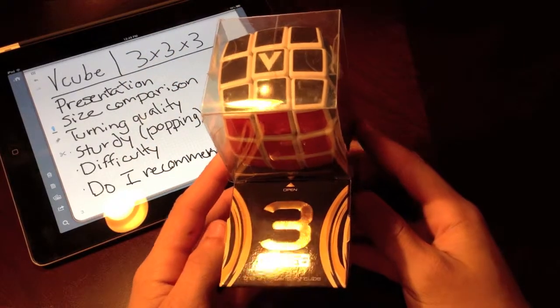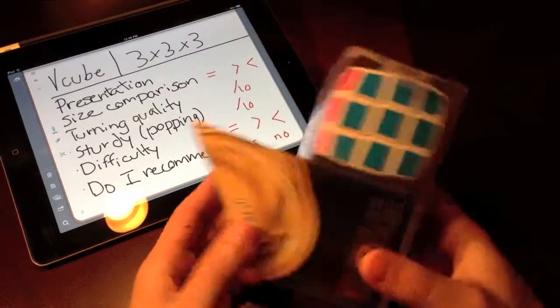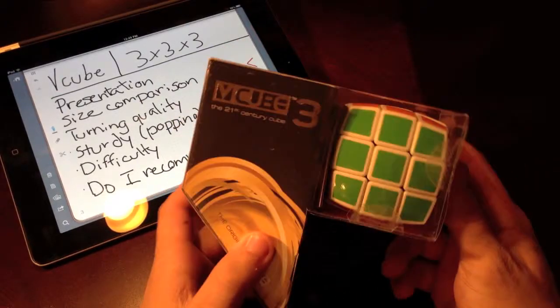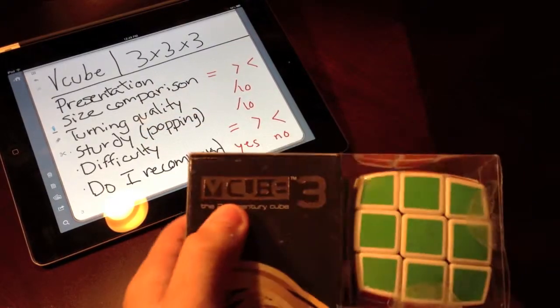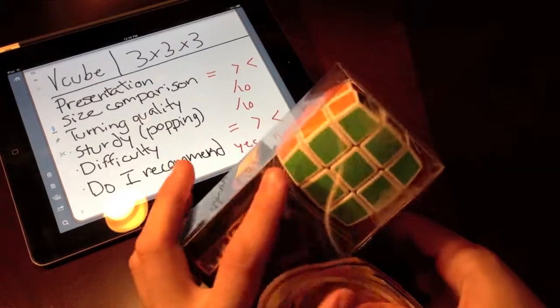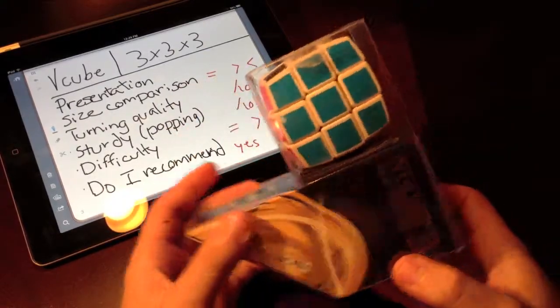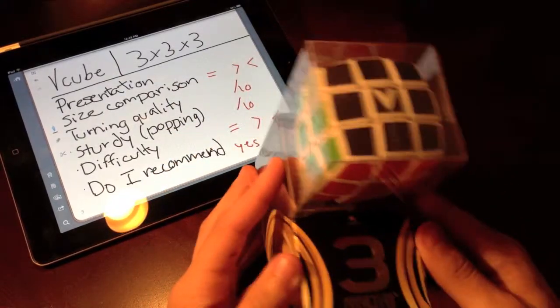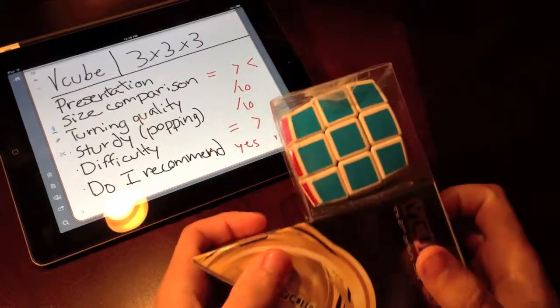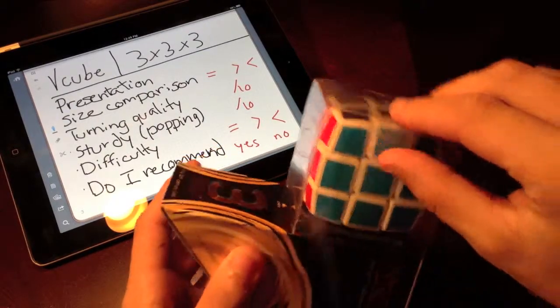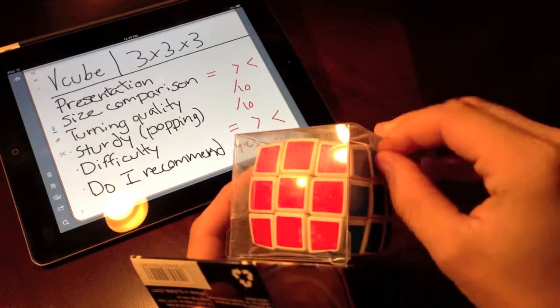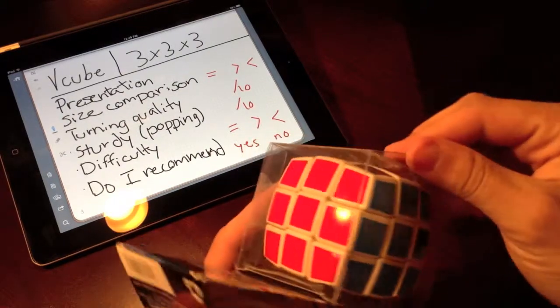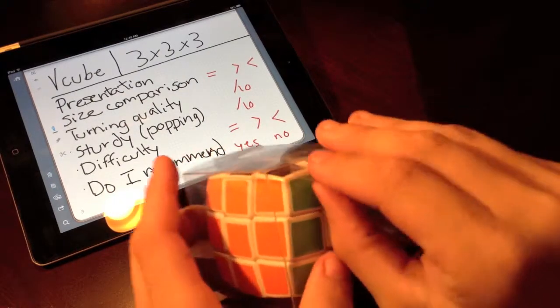All right guys, welcome back. We're here for a review, unboxing, whatever you want, from vCube. It's just a normal 3x3. My mom bought it as a gift and here I am right now reviewing it. First of all, let's open it. It's never been opened before and I can't wait to see how it's gonna move.